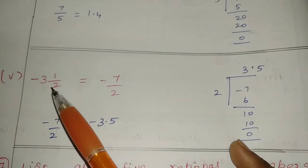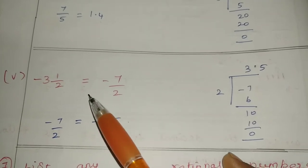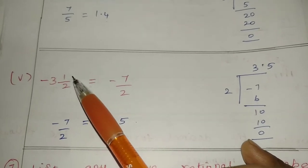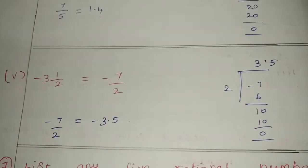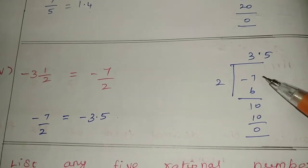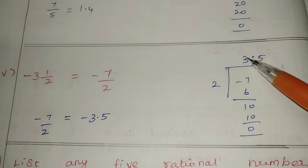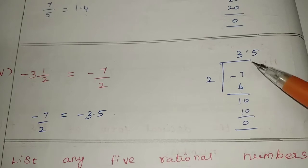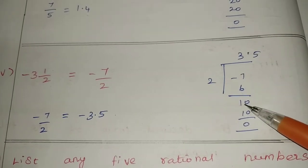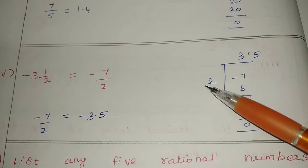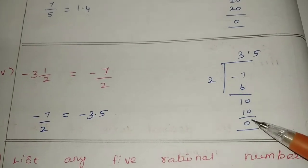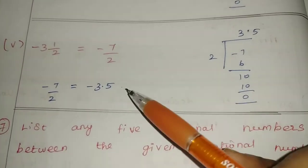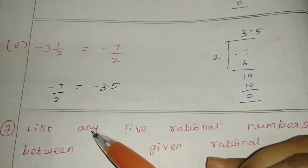5th: 1 minus 3 1/2 is equal to — there is a negative minus symbol — so 3 times 2 is 6, giving 7 by 2. So 7 by 2: divide — 3 times 2 is 6, so 7 minus 6 is 1. The value: minus 7 by 2 is equal to negative 3.5.